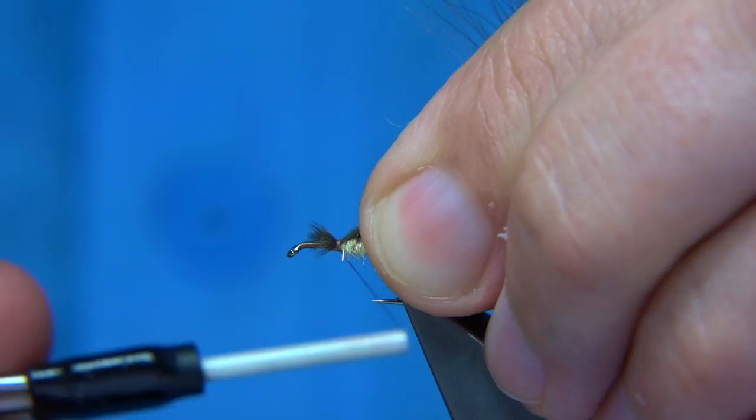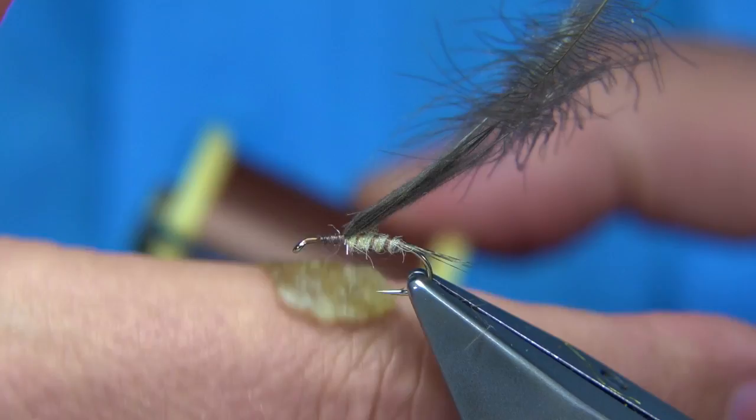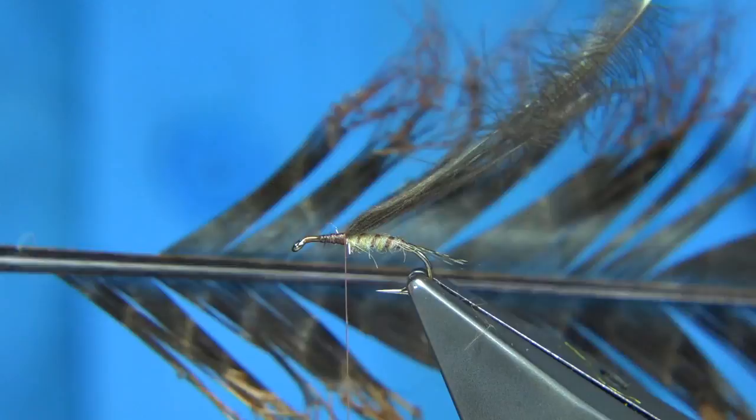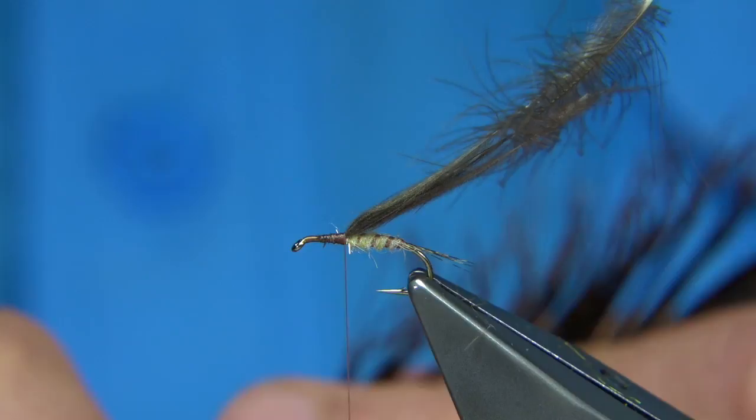And then, let's make sure this is secure. Now, this is an optional thing. I'm going to put some legs on. This is pre-knotted pheasant tail legs. Now, I'm going to put two either side. Just give an impression of the legs. Tear off four in this case, obviously.